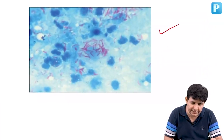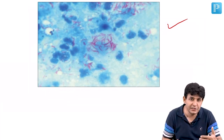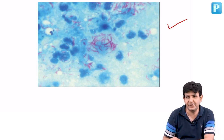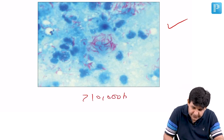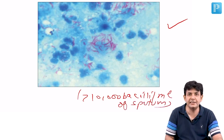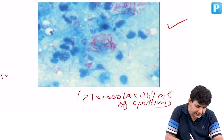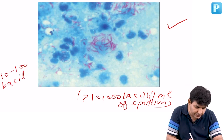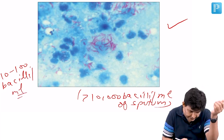They can show you a picture and ask what this is — this is ZN staining. An important question: how many bacilli per ml of sputum must be present to be seen on ZN staining? The answer is more than 10,000 bacilli per ml. If less than this, ZN staining will fail. For culture, 10 to 100 bacilli per ml of sputum is sufficient.